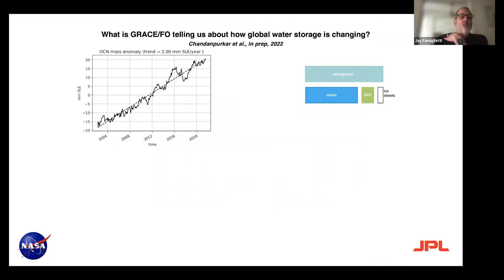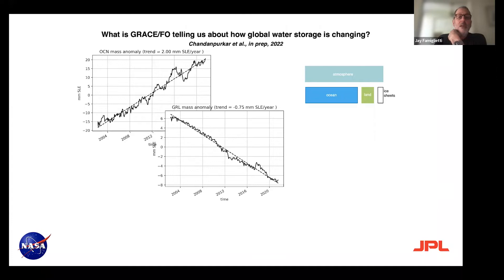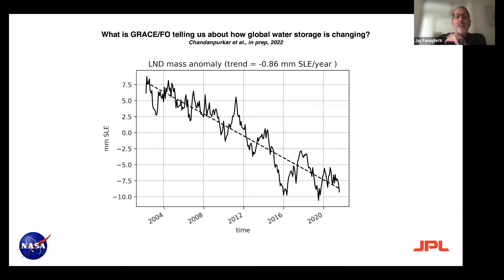Looking at the trends a little bit more: here's the ocean trend, rising at about two millimeters per year — sea level rise. And then here's Greenland and here's Antarctica. We never had the land before, so to see this big downward trend is significant. Notice the trend here, the minus 0.86 — this is in terms of contributions to sea level, normalized by the area of the ocean.